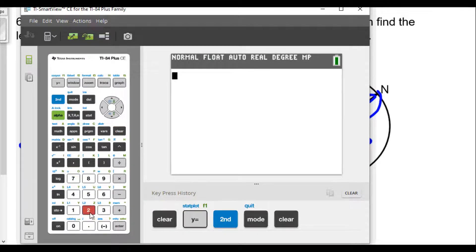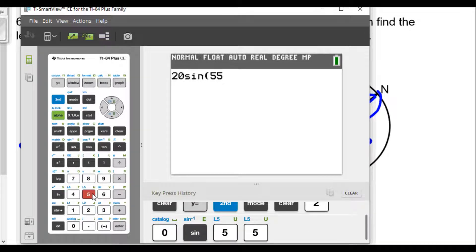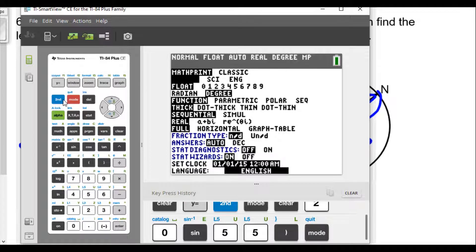So here's our calculator. So we'll type in 20 sine of 55. Now I'm going to also double check because you should always check to make sure that you're in the correct mode. We are in degree mode, so we're good.